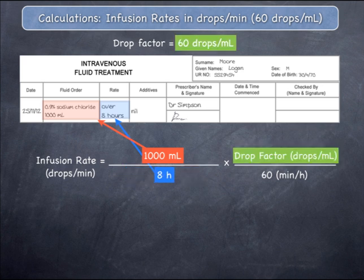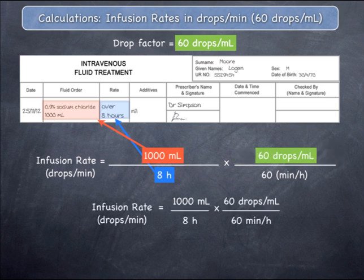The drop factor is printed on the packaging the infusion line comes in. In this case, it is 60 drops per mil.